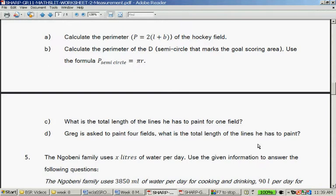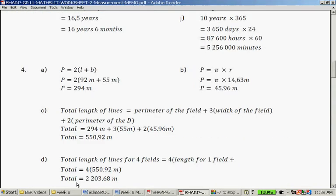Greg is asked to paint four fields. What's the total length he has to paint? So you take the fields times four, and that's 2,203.68 meters.